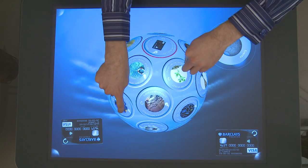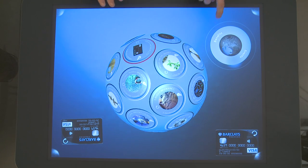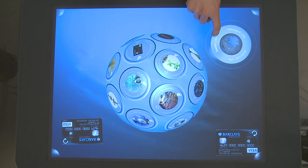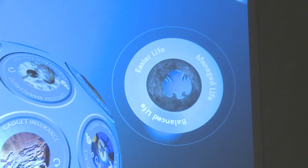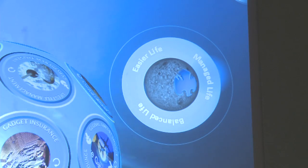Now this application was built for customer acquisition and customer retention. So we have our benefits globe here, which has three different types of benefit categories: manage life, easier life, and balanced life. When you touch one of those categories on the control, it'll highlight the relevant benefits on the globe.